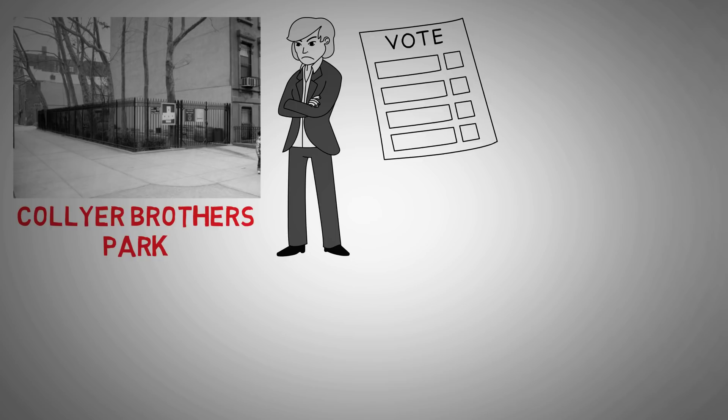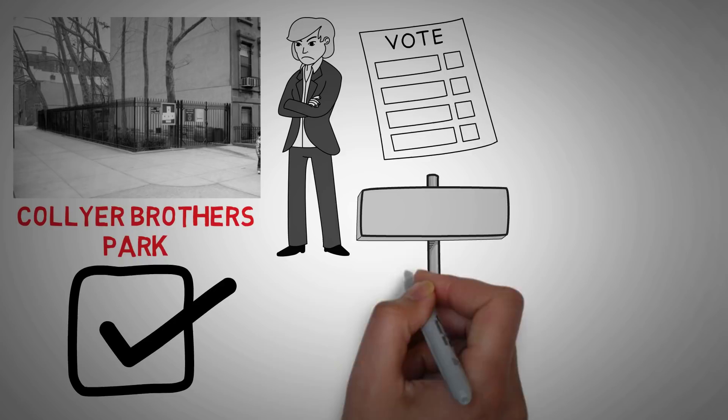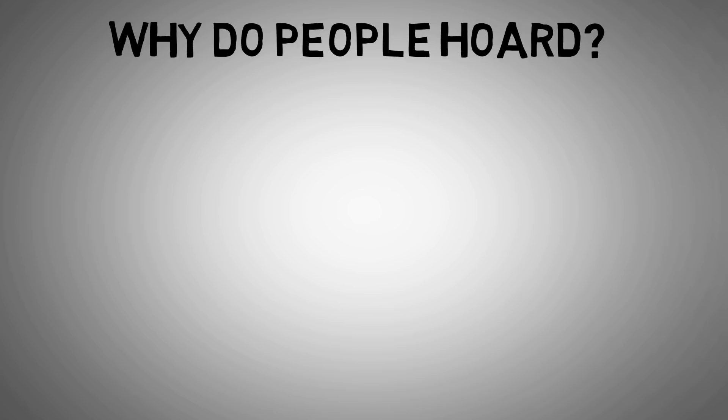Well, a name change was even put up to vote, but city officials voted to keep the park named after the Collier brothers. They reminded their colleagues that although the brothers were not known for significant achievements in art or science, they did make a mark on the neighborhood. Parents around New York City would tell their children that if they didn't clean up, they would end up like the Collier brothers.